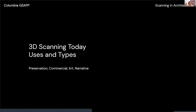Now I want to show some interesting examples. I've grouped scanning projects into four categories: preservation projects, commercial projects, art projects, and narrative or museum/display projects. These categories are by no means strict — a lot of projects are hybrids, which is something very interesting about scanning. Most of them are crossovers, but the groupings help think about different avenues of how scanning can become useful for architects.